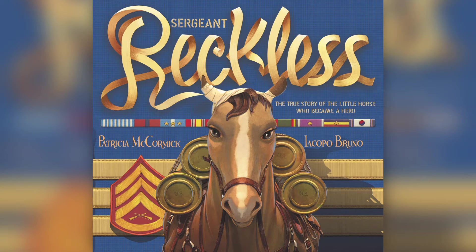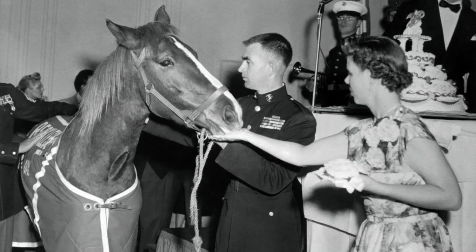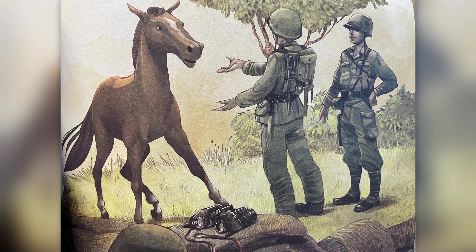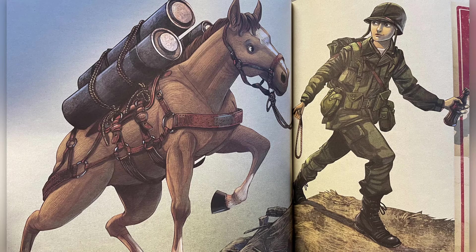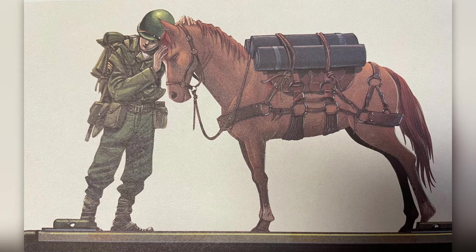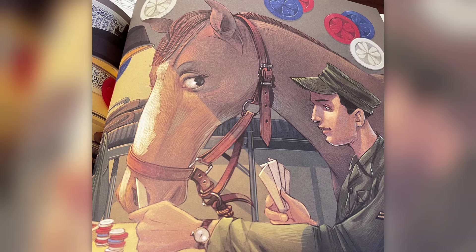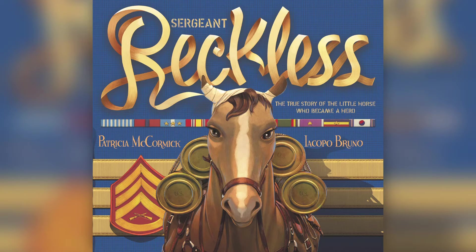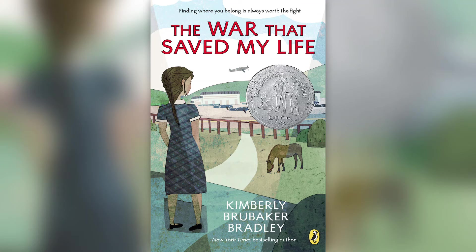Sergeant Reckless by Patricia McCormick and Iacopo Bruno is the true story of a brave horse who became a hero during the Korean War. Reckless was a little horse who was found by some US Marines serving in Korea. Reckless became a part of their unit and quickly learned to carry supplies and protected the soldiers. She also was well known for her huge appetite and the variety of things she ate like eggs, coffee, and coca-cola. Learn about the true horse that made a big difference to a bunch of marines in Korea in Sergeant Reckless.